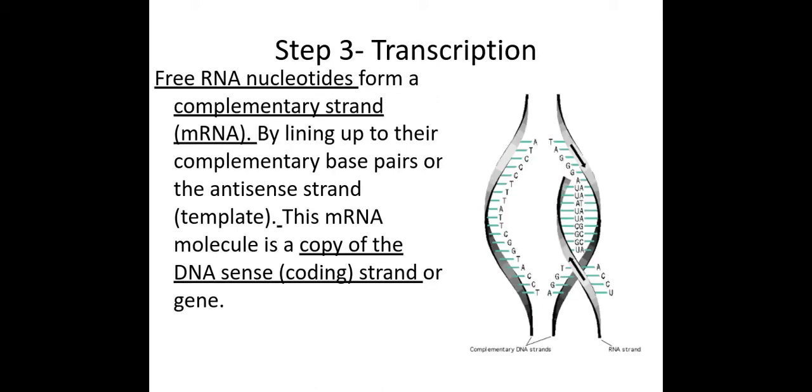So once those bonds have broken and my bases are now exposed, what will then happen is free RNA nucleotides will come and line up along their complementary base pairs. So wherever I've got an A, I'll get a U in my mRNA. So don't forget, RNAs do not have the base T. They only have U instead of that T.